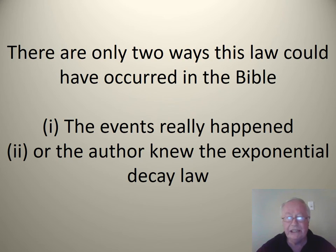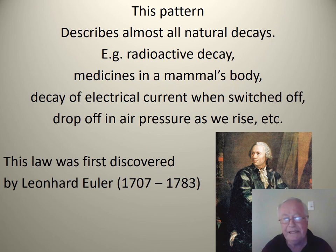There are only two ways this law could have occurred in the Bible. Number one, the events really happened. What this is describing is a real occurrence just like the drug in the human body or radioactive decay or the decay in air pressure as you move up from the earth's surface. This is a real happening, or the person who wrote these numbers knew the exponential decay law. This is the same pattern that you'll see in all natural decays: radioactive decay, medicines in a mammal's body, decay of electrical currents when switched off, drop off in air pressure as we rise above the earth's surface. The law was first discovered by Leonard Euler in the 1700s, some contribution by Newton and a fellow called Napier as well, but basically that was the age in which it was discovered.